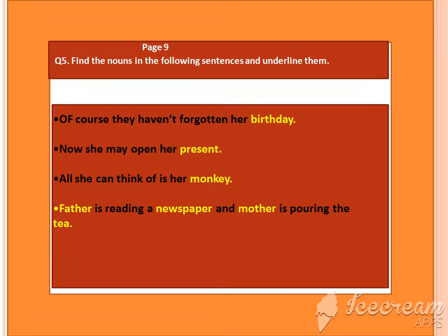You know what a noun is? A noun is the name of any person, place, or thing. Here are the nouns which I have highlighted with yellow color.